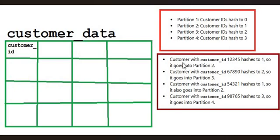For example, suppose customer_ID is 1, 2, 3, 4, 5 and it hashes to one — so it goes into partition number two, because partition number two includes all IDs that hash to one. Similarly, if customer_ID is 9, 8, 7, 6, 5 and it hashes to three, it goes to partition number four. You may ask why 1, 2, 3, 4, 5 hashes to one — it depends entirely on the hash function being used. It is just for illustration: when you input the value 1, 2, 3, 4, 5 into the hash function, the output is one. The interpretation differs for specific hash functions.